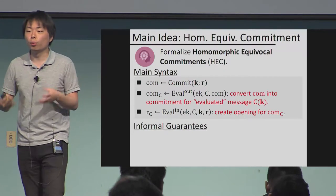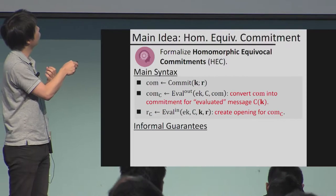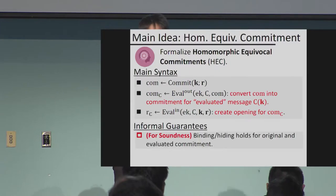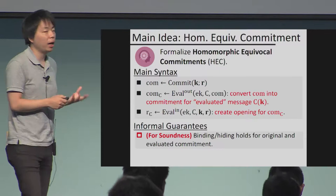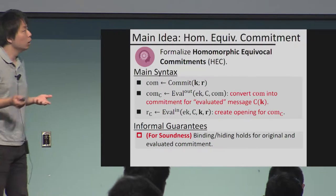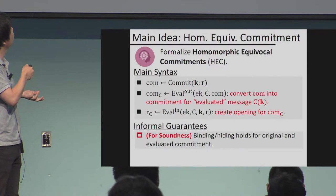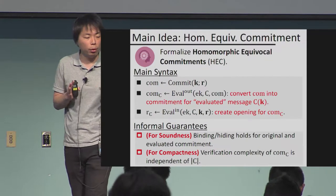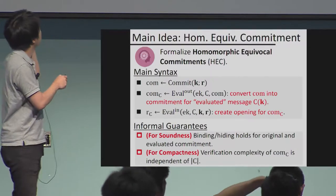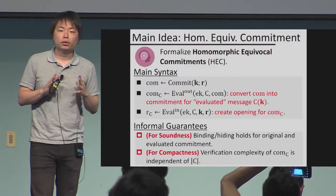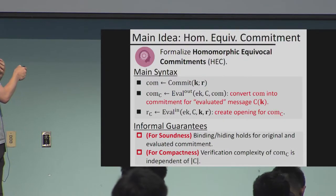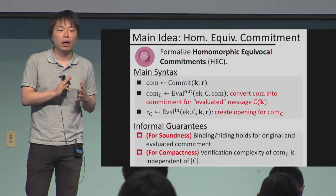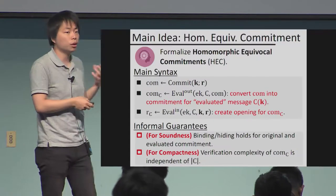The informal guarantees from the HEC scheme: for soundness, we want the binding and hiding property — standard for a commitment scheme — and we want the evaluated commitment to also be binding. For compactness, we require that the verification complexity of commitment C is independent of the circuit size. Informally, the evaluated commitment and the evaluated opening randomness are much smaller than the circuit size. In our construction, these will be only a constant number of group elements.